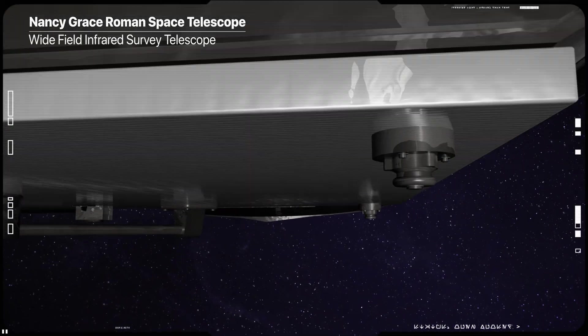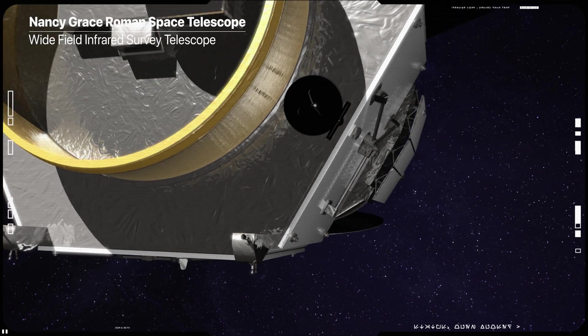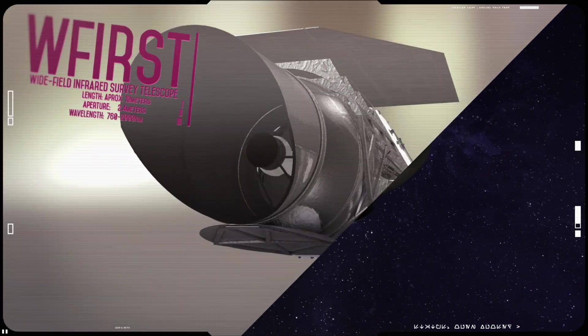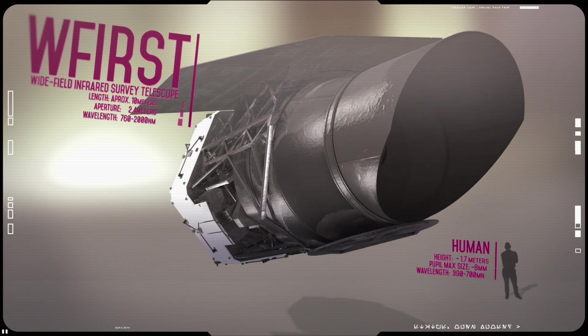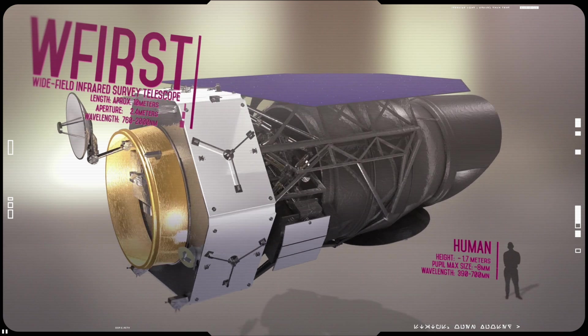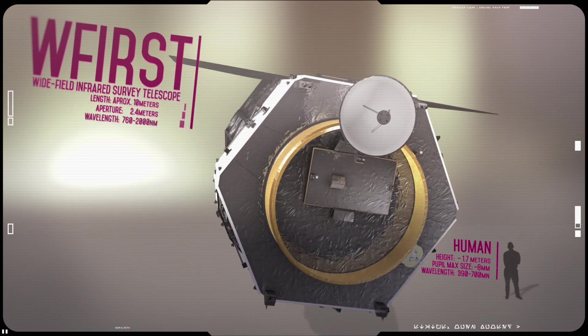One hundred times larger field of view than Hubble and one and a half million kilometers away from Earth. The Nancy Grace Roman Space Telescope, formerly the Wide-field Infrared Survey Telescope, is NASA's next-generation space observatory designed to replace Hubble.